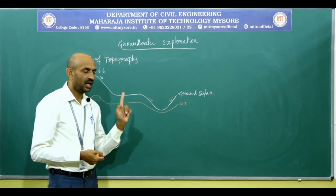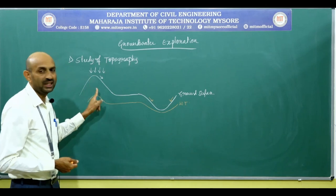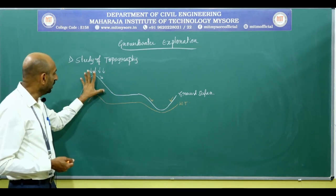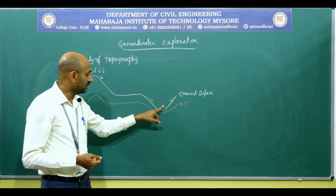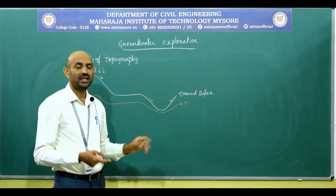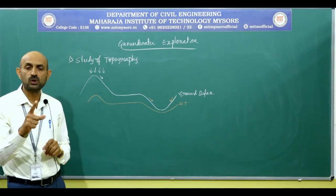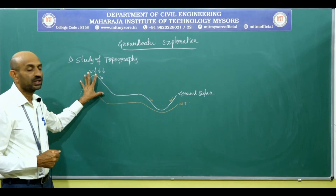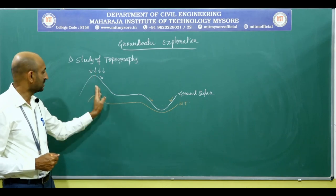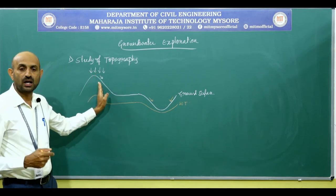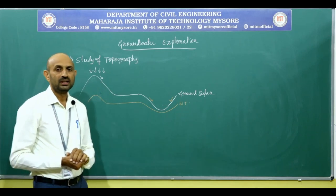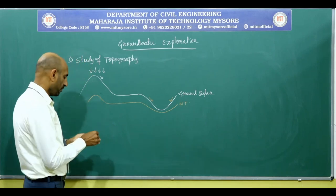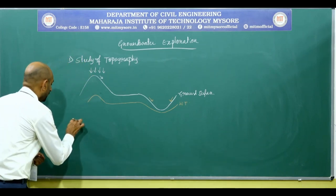By studying the topography, we can conclude which site is suitable for seeking groundwater. According to our geological knowledge, by studying relief features — hill, level ground, and valley region — the valley region is the most suitable to seek groundwater compared to tops of hills or steep and gentle slopes. The second point is the study of rainfall and climate.